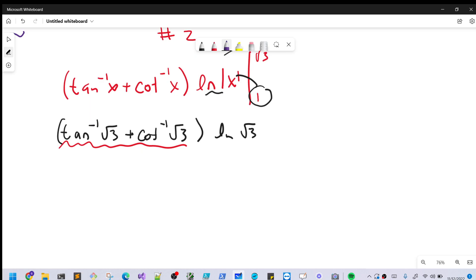Tan inverse at square root of three is going to be pi over three. And then plus cotangent inverse at square root of three is pi over six. So together, we could write this piece as two pi over six. So together, this is three pi over six or pi over two.